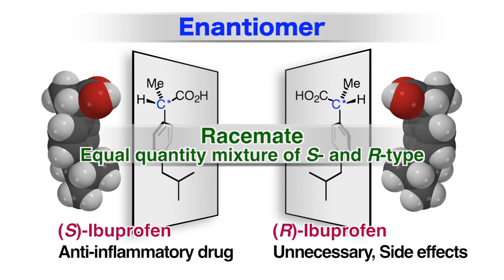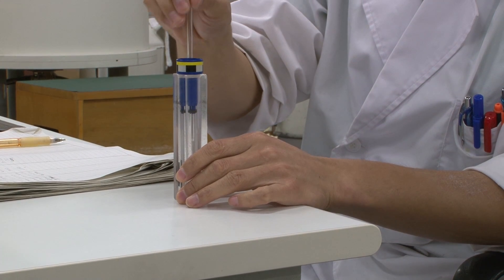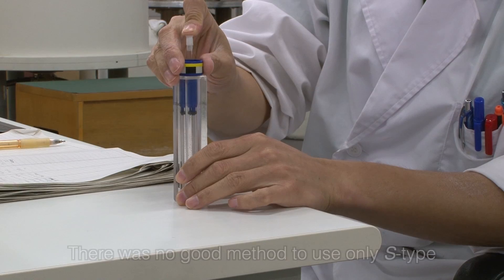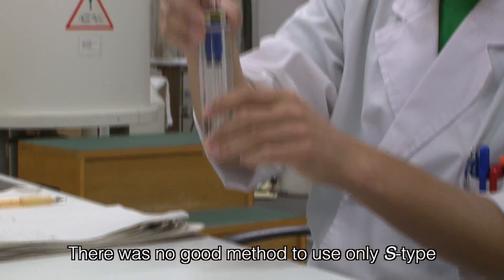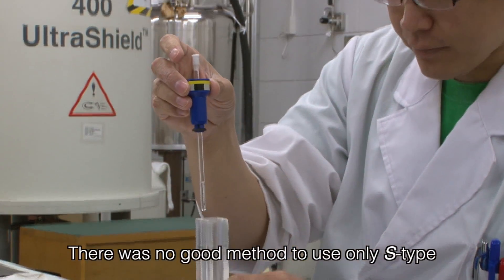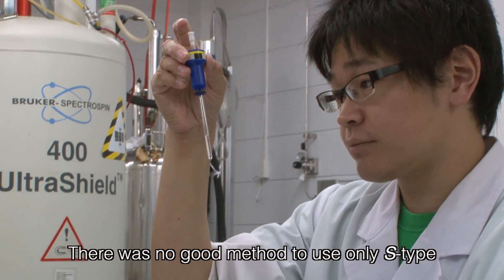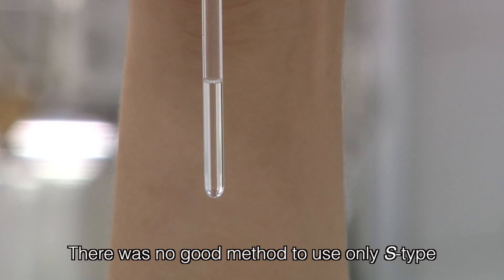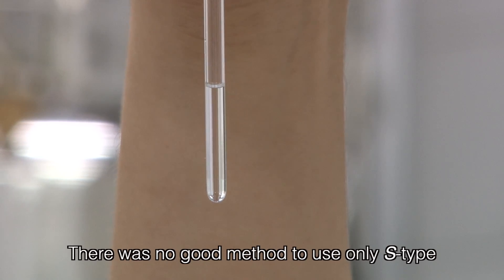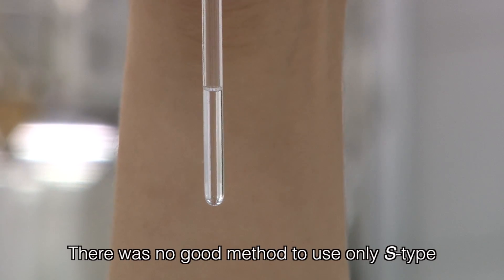Standard methods of synthesis can only produce a mixture of equal amounts of S and R-types, which is called a racemate. Methods have been tried for synthesizing only the S-type, or extracting the S-type from the racemate, but with little success.